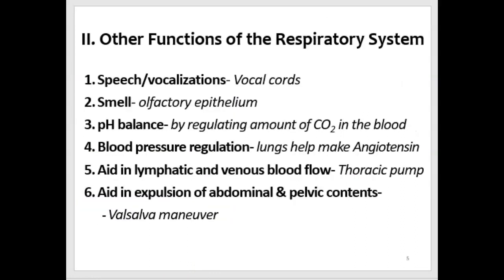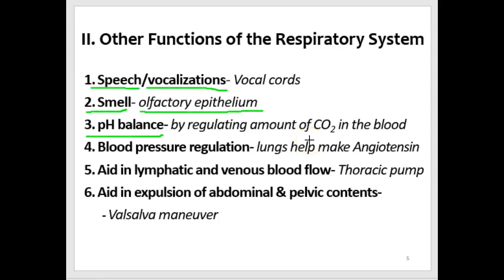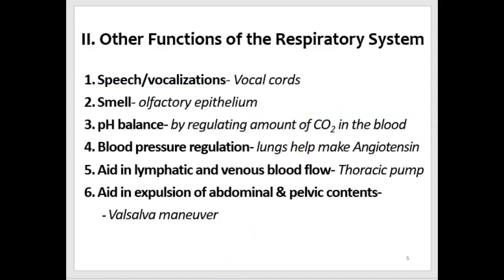Some other functions of the respiratory system include speech or vocalizations, which involves the vocal cords found in the larynx. And smell — when we inhale, odors are detected in the nasal cavity by the olfactory epithelium. Another important function is the balance of pH in our body fluids and tissues. The respiratory system contributes to this by controlling how much CO2 is in the blood: CO2 makes the blood acidic, and by getting rid of CO2, the blood becomes more basic.